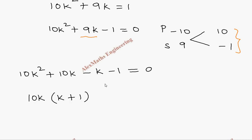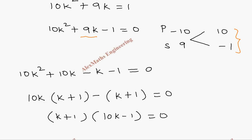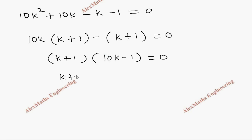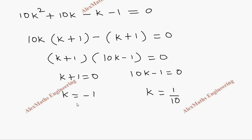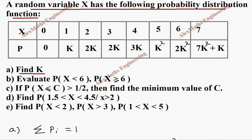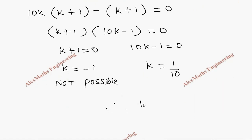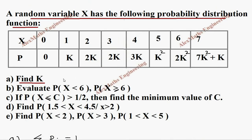Taking 10k minus 1 as a common factor, we get 10k minus 1 equal to 0. Equating individual factors to 0 gives two values of k: minus 1 and 1/10. The value minus 1 is not possible because substituting it into the table produces negative probability values. Therefore, the only valid value is k = 1/10.